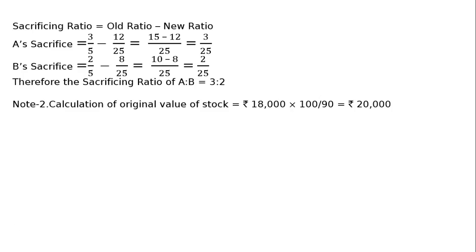Note 2: Calculation of original value of stock. That is Rs 18,000 × 100/90 = Rs 20,000. This is very important. Stock is undervalued by 10% — it is appearing at 90%. To make it 100%, divide by 90 and multiply by 100 using the unitary method, giving Rs 20,000. So 10% of 20,000 is Rs 2,000, and after deducting Rs 2,000, stock appears at Rs 18,000. Stock is undervalued by 10%.